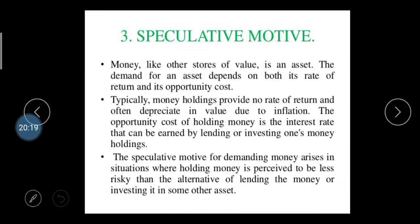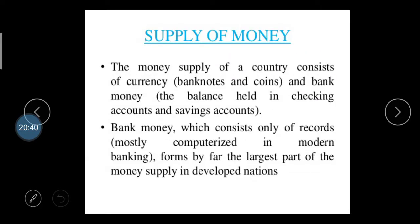The speculative motive for demanding money rises in situations of speculation — investing a large amount hoping for gain, which is a type of gambling. Whenever holding money is perceived as less risky than alternatives like lending or investing in other assets, people hold money for speculative purposes. Regarding the supply of money, a country's money supply consists of its banknotes and coins, plus bank money held in checking accounts and savings accounts, recorded mostly in computerized modern banking systems.